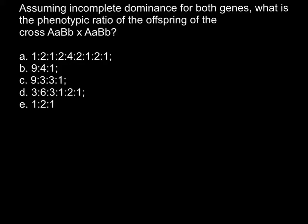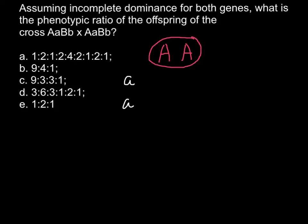Before I give you the answer and show how to do it, I want to explain what incomplete dominance means. Imagine we have one parent who is capital A, capital A, and another who is small a, small a, for some particular trait — for example, the color. The color of this parent's flowers would be red and the color of this parent's flowers would be white.